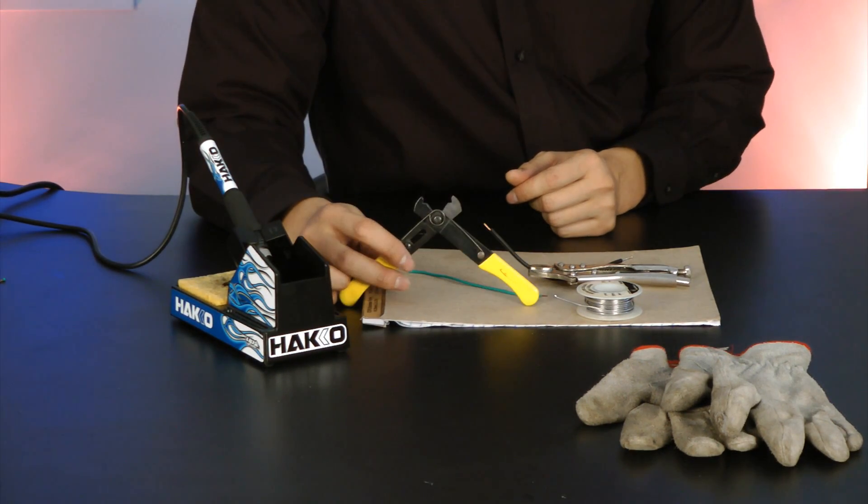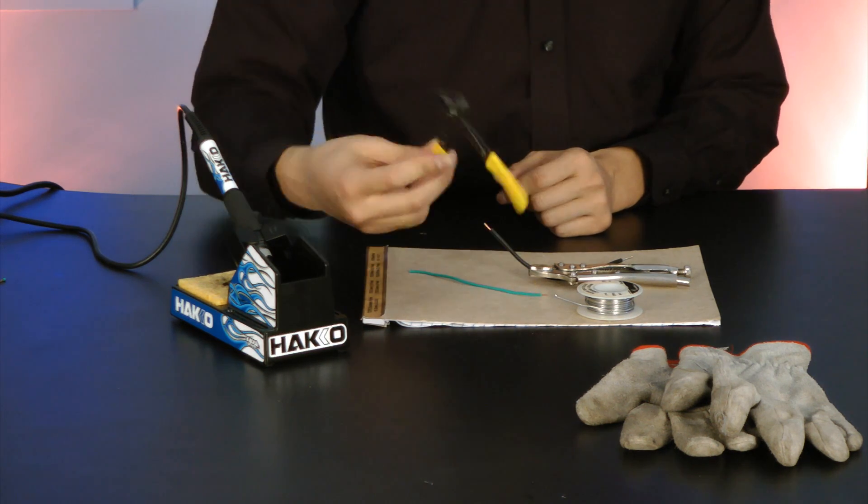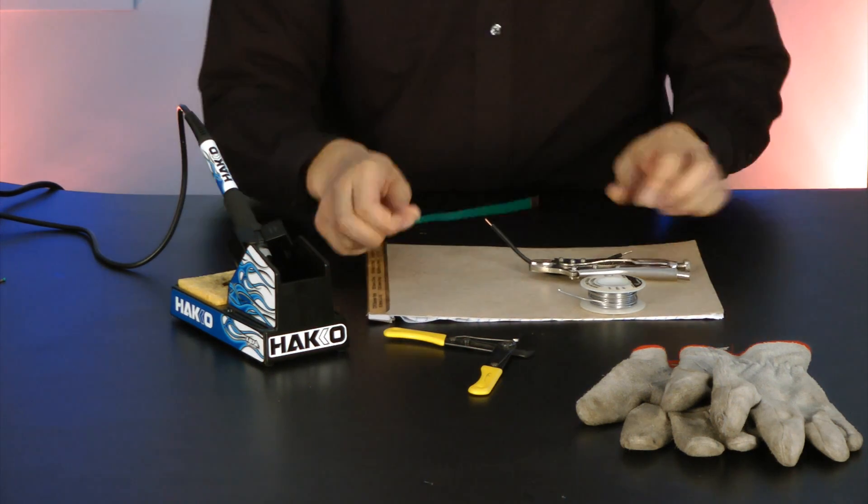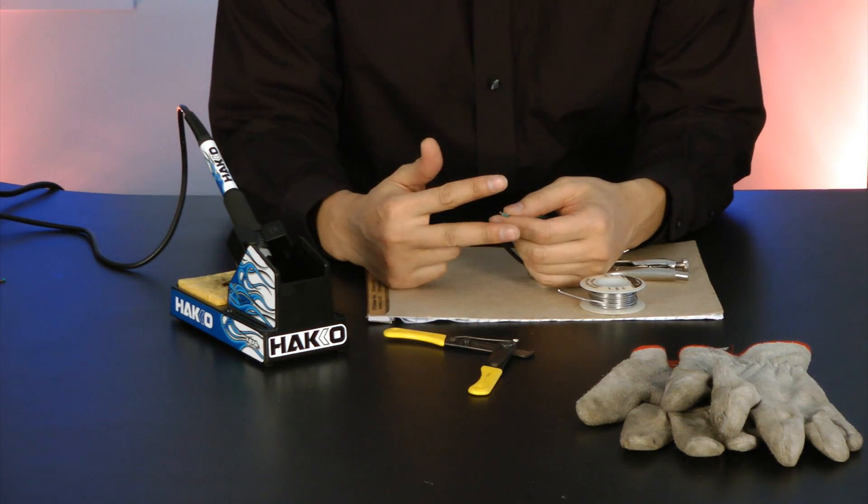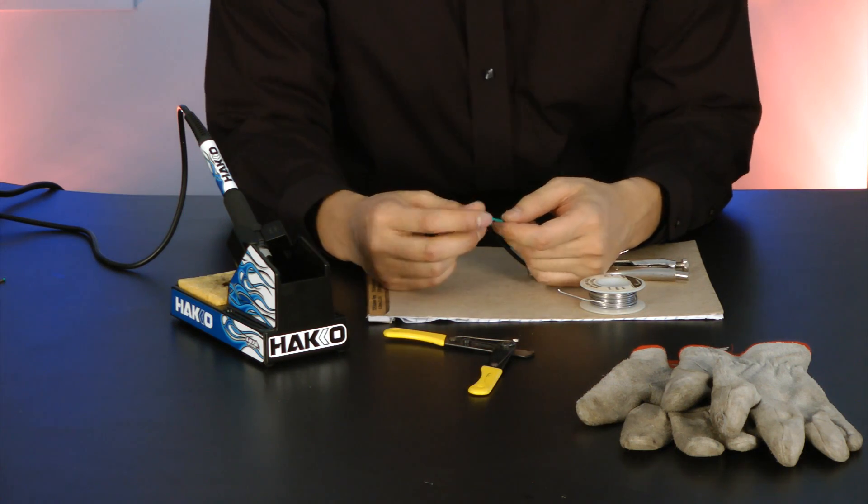Next, because we're working with wires, a nice pair of wire cutters or a sharp knife will work. And what we'll be using them for is cutting the wires and then removing the insulation.